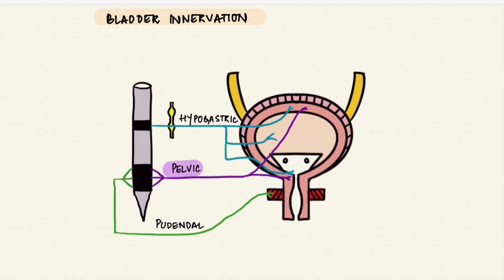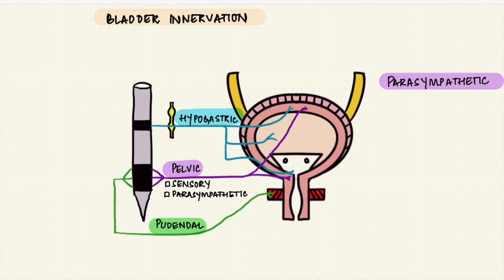The pelvic nerves have sensory fibers and parasympathetic fibers. The sensory fibers pick up stretch from the stretch receptors as the bladder fills. The parasympathetic nerves from the sacral spinal cord that's S2, 3 and 4, they act via acetylcholine on the M3 receptors. That causes contraction of the detrusor and relaxation of the internal sphincter. So the parasympathetic system causes emptying of the bladder.